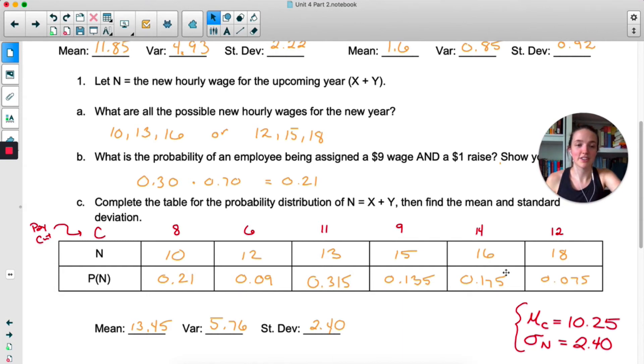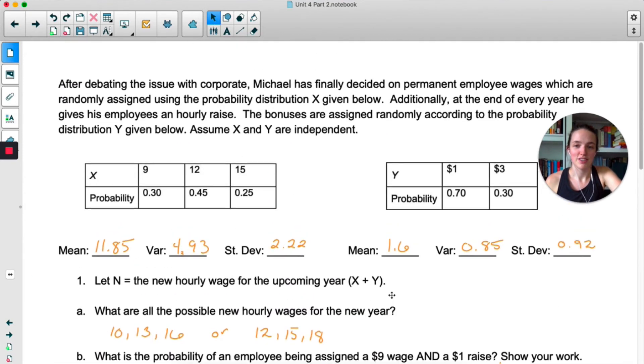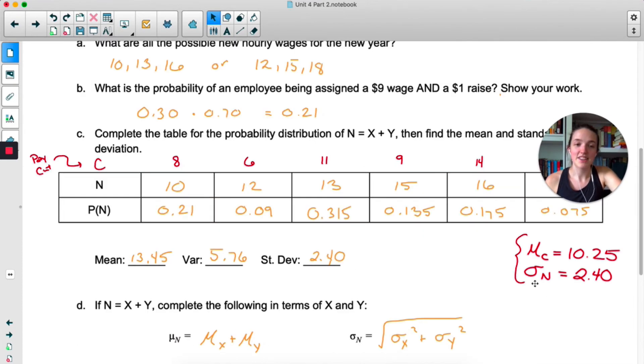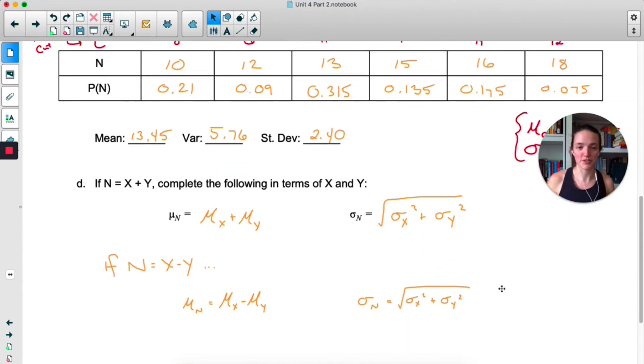Once again, I'll save you some time on your calculators and just tell you that the mean of this new variable is 10.25, which you'll notice is just mean of X minus the mean of Y. And the standard deviation is the same as the standard deviation was before. So this is interesting. If you subtract two variables from each other, you subtract the means to get the new mean, but you add the variances.